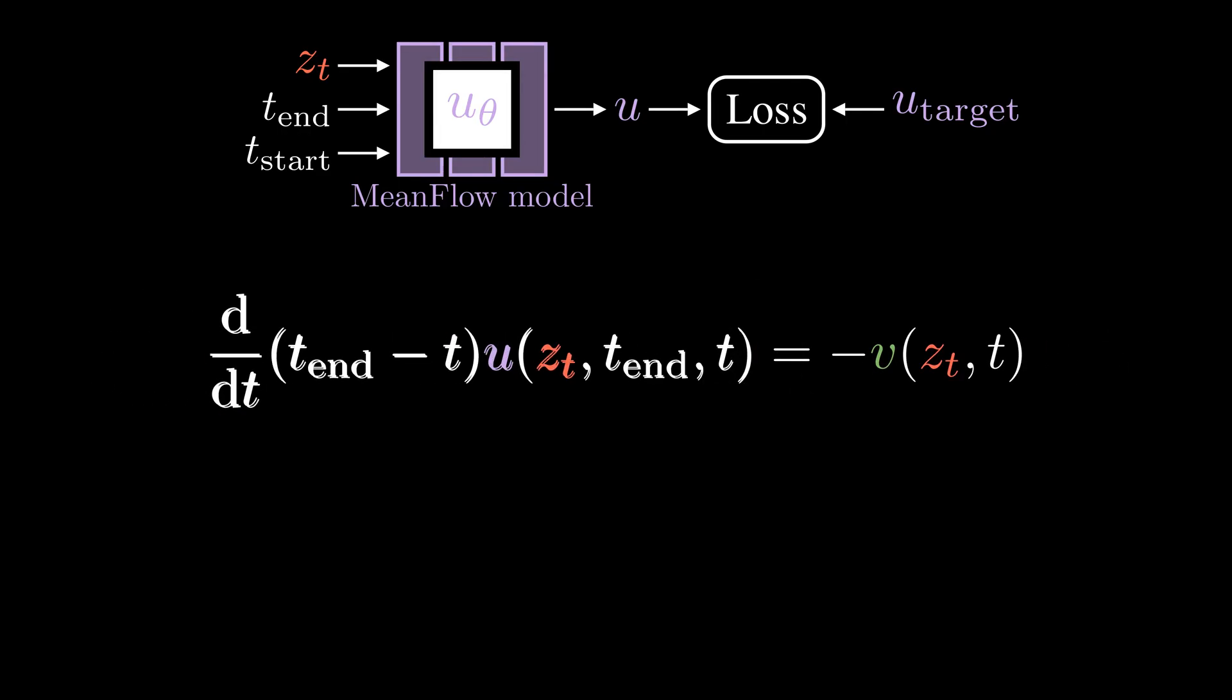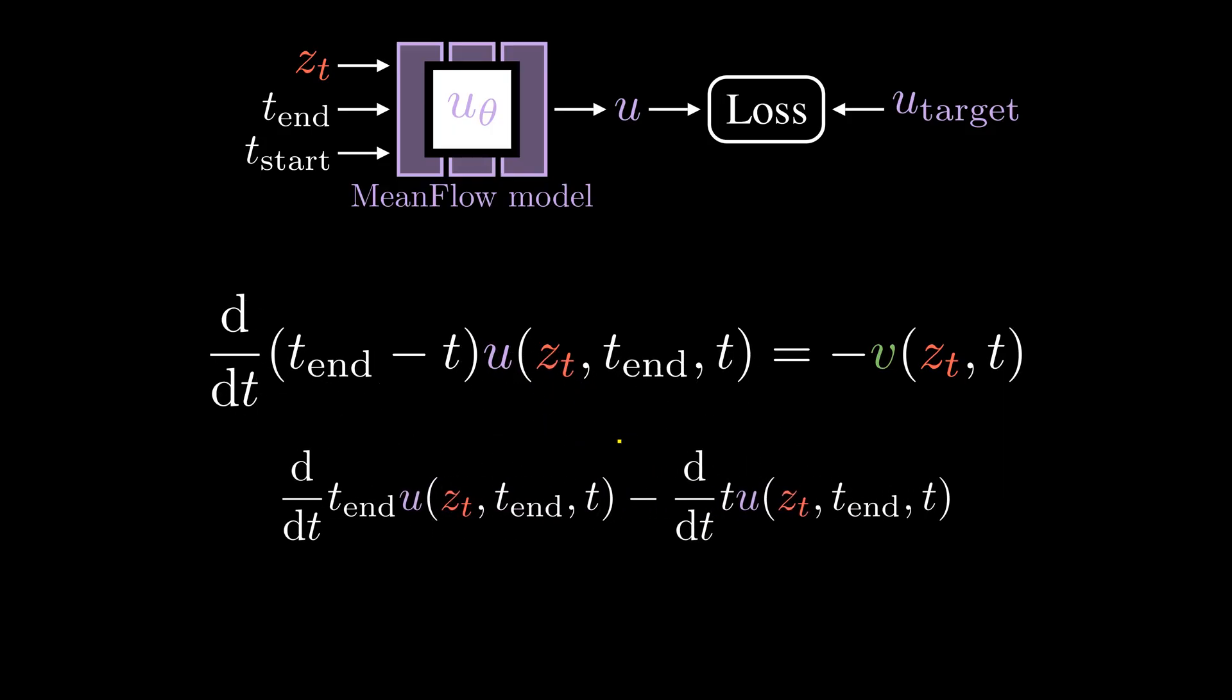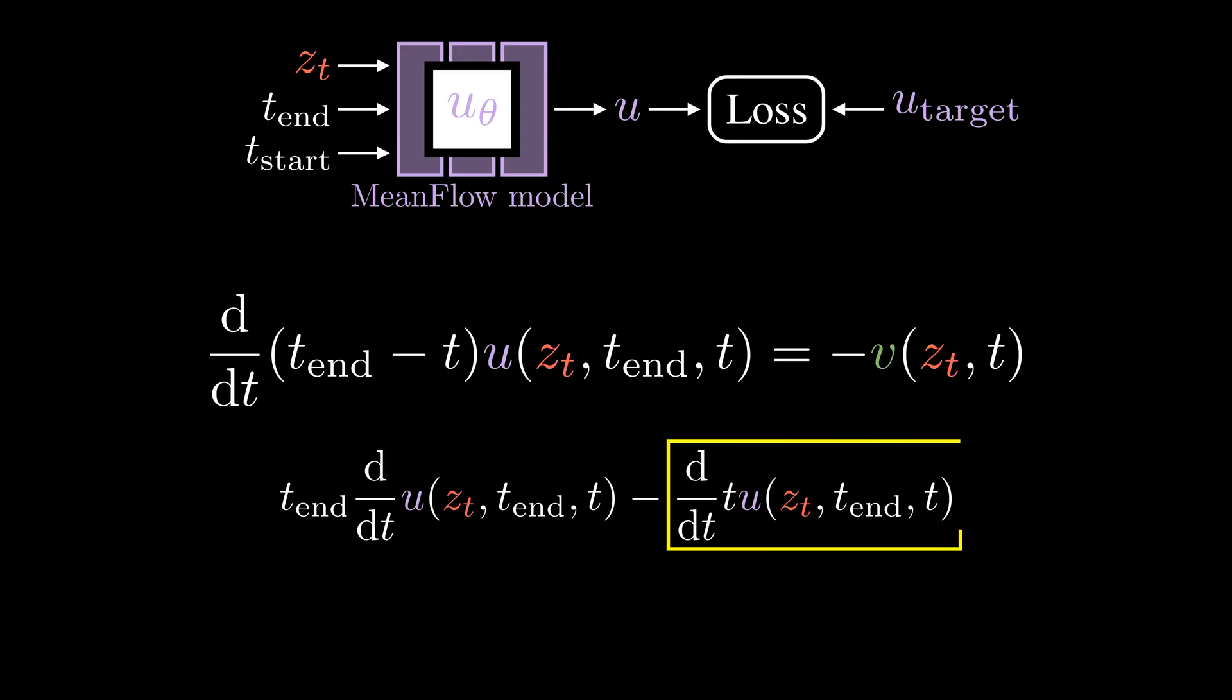Alright, let's now look at the left hand side of the equation. This term is easy. We can move the derivative operation inside, assuming that the time t_end does not depend on the time t. This term is more interesting. Here we are taking the derivative of the product of two functions. In calculus class, we learn how to deal with this using product rule. The derivative is the first function times the derivative of the second, plus the second function times the derivative of the first.